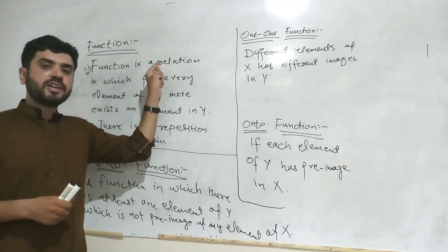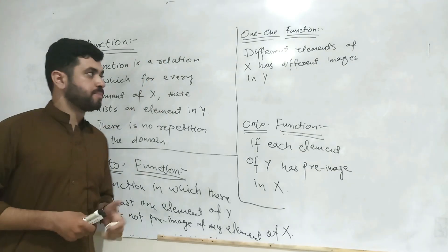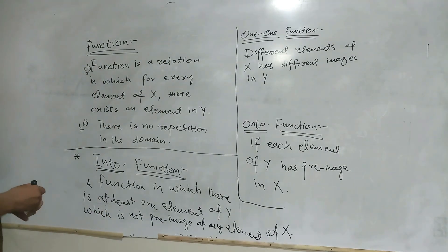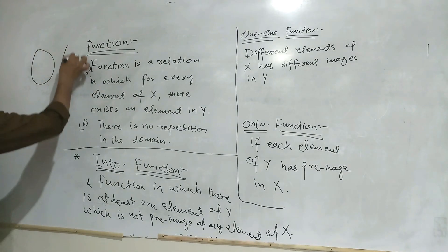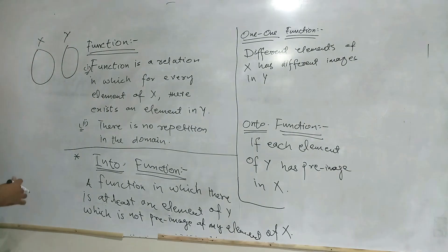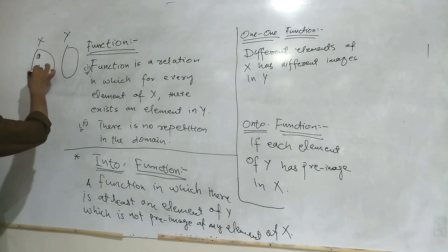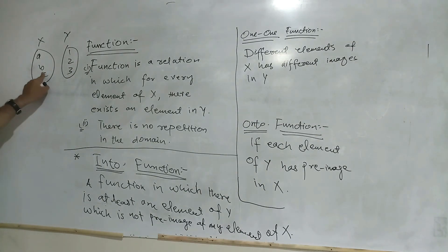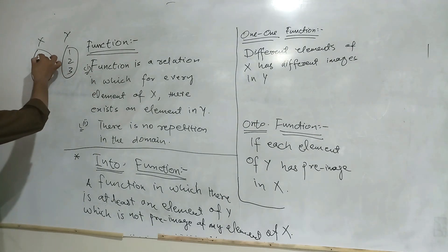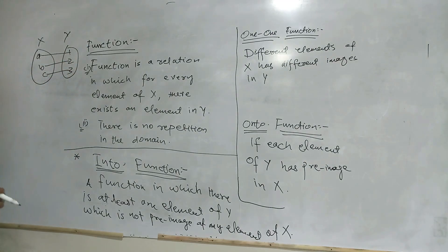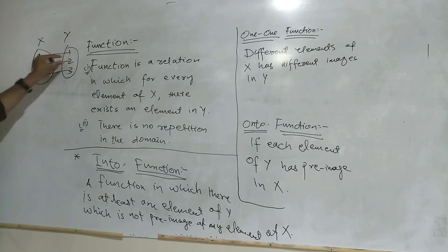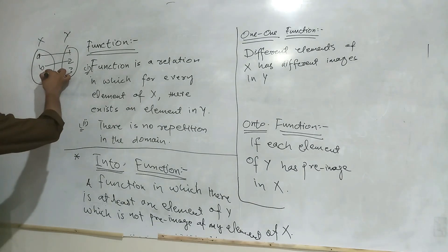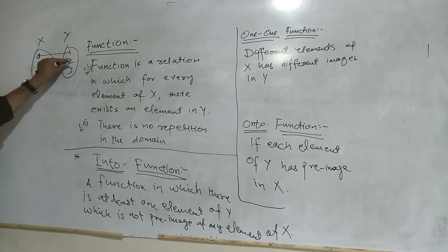A relation between two sets is a collection of ordered pairs containing an element from each set. Let me explain using two sets. A, B, C are elements of X and 1, 2, 3 are elements of Y. The function says for each element of X there exists an element in Y. A maps to a different element, B maps to a different element, C maps to a different element — or B and C can map to the same element.